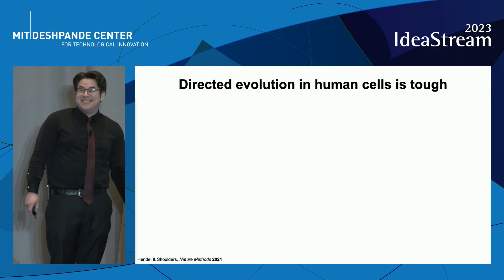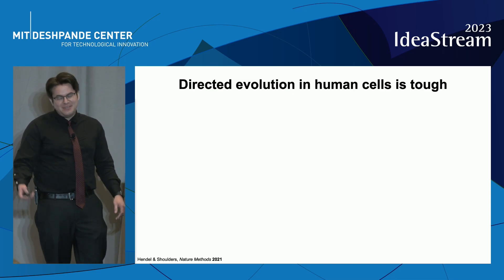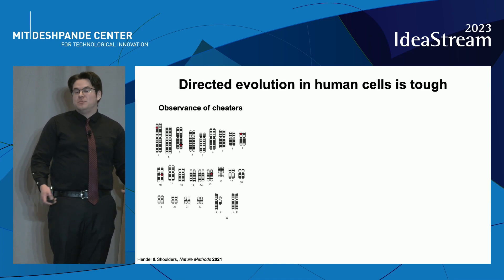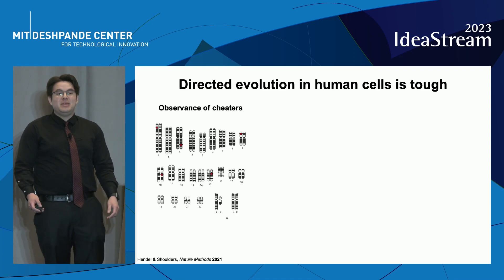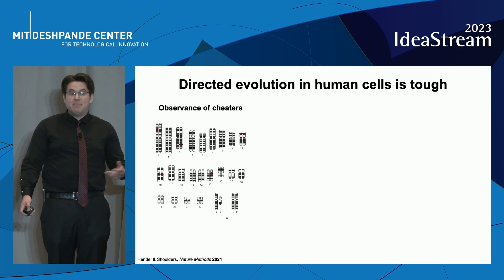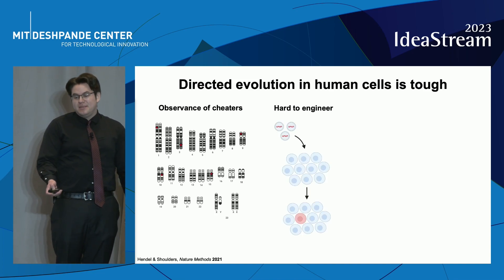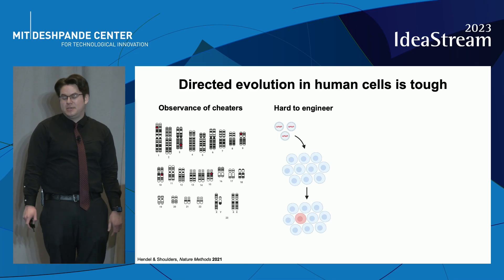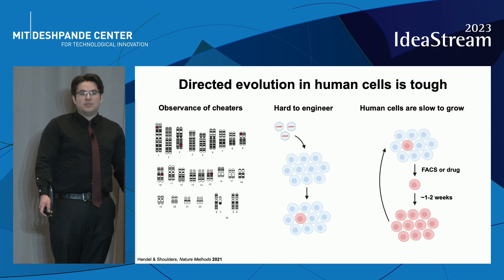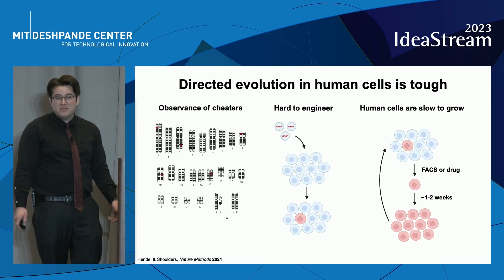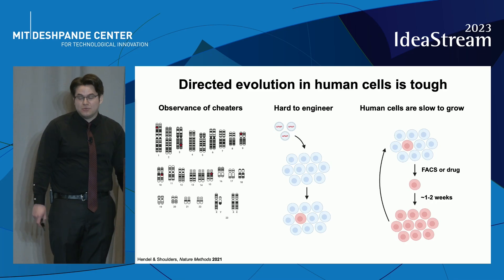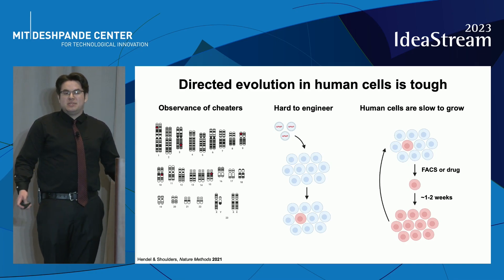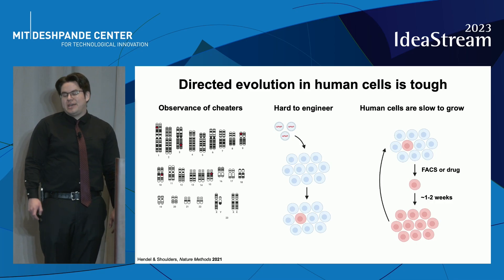It's easier said than done. Directed evolution in human cells is tough — just to give you a few reasons why. Firstly, the human cell genome is much larger than that of bacteria and yeast, meaning there are more ways to cheat the system and bypass evolution. This additionally means that engineering a system that uses human cells is inherently difficult. Lastly, human cells are pretty slow to grow compared to bacteria and yeast, which itself slows evolution down. All of these reasons, as well as others, can bring a potential directed evolution campaign to a halt.